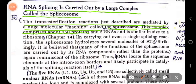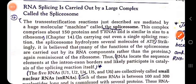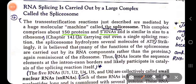The spliceosome also contains five small nuclear RNAs and is similar in size to the ribosome. Just as the ribosome is composed of large and small subunits made up of many proteins and RNA, the spliceosome complex is also made up of 150 different types of proteins and five small nuclear RNAs.